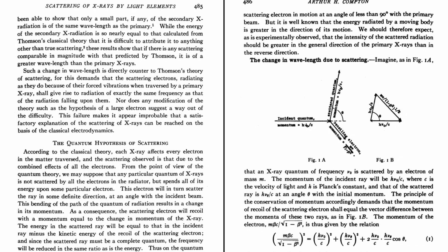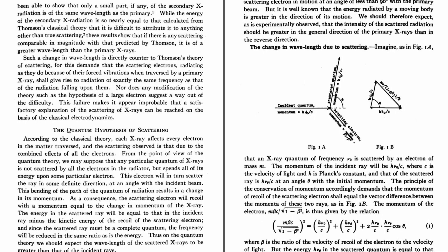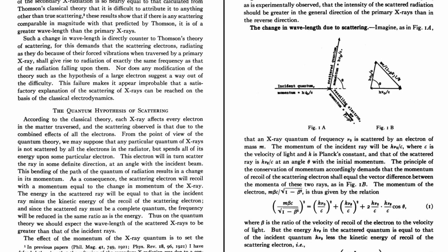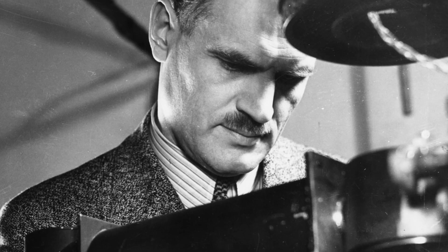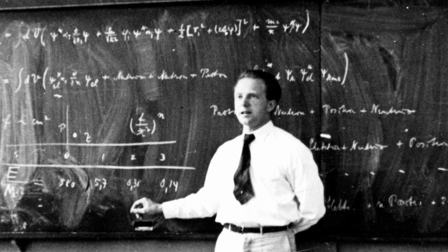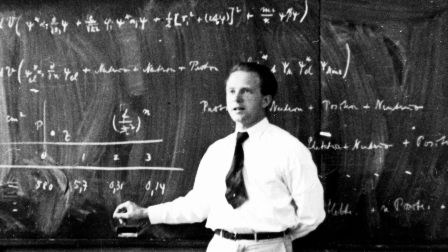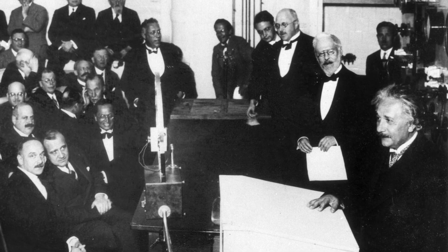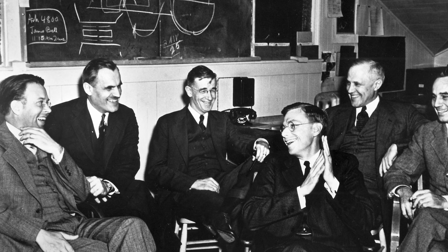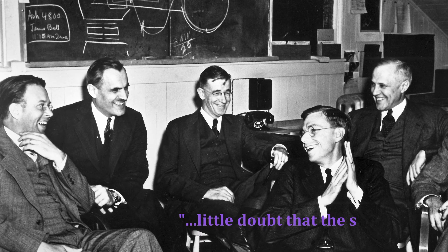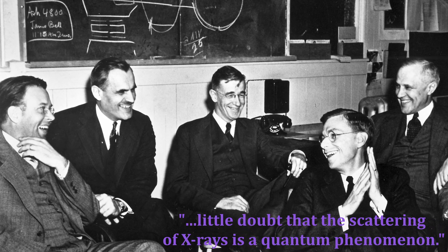He published this paper in 1923, and by the end of the year, Charles Wilson observed these recoiling electrons in his cloud chamber. The two of them shared the Nobel Prize in physics for this work in 1927. Compton's work on x-ray scattering has been recognized by many as the pivotal moment in history when scientists left classical theory in favor of quantum physics, as it showed complete concrete evidence of the wave-particle duality of light proposed by Einstein in 1905. As Compton himself put it in his paper, there was now "little doubt that the scattering of x-rays is a quantum phenomenon."